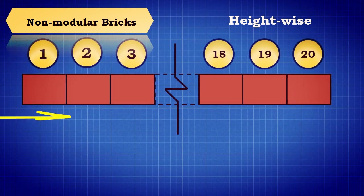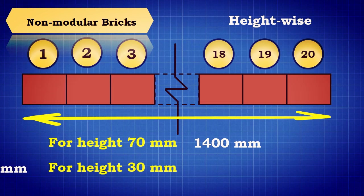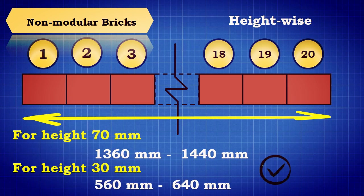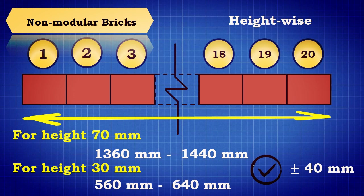When placed heightwise, it should be 1400 mm for 70 mm height bricks and 600 mm for 30 mm height bricks. The tolerance limit of acceptance is between 1360 mm and 1440 mm for 70 mm bricks, and between 560 mm and 640 mm for 30 mm bricks, that is plus or minus 40 mm.